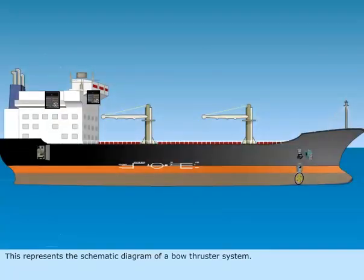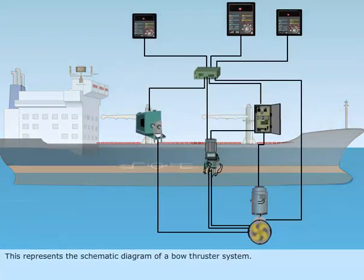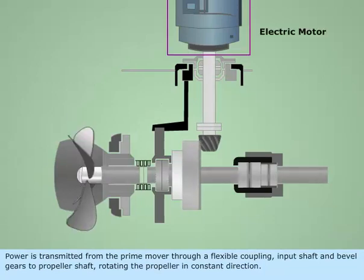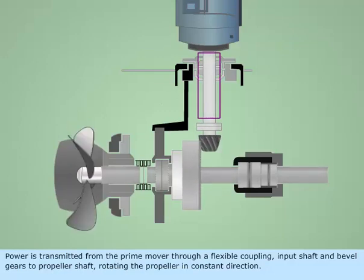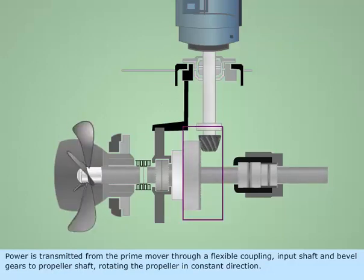This represents the schematic diagram of a bow thruster system. Power is transmitted from the prime mover through a flexible coupling, input shaft, and bevel gears to propeller shaft, rotating the propeller in constant direction.